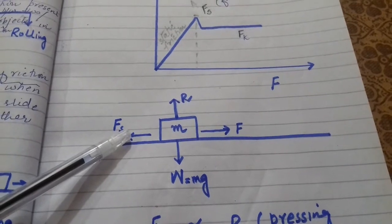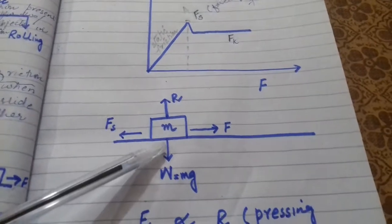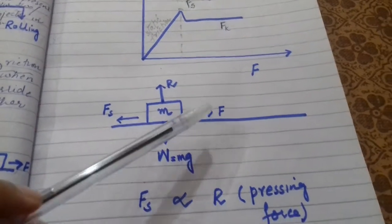But at some point - point A - which represents the force of limiting friction, when you increase the force further, the body will slip.